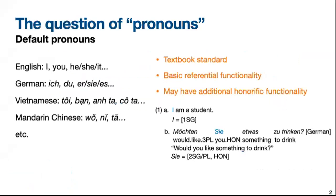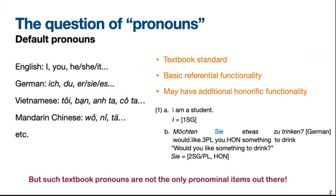We begin by taking a look at the default or textbook pronouns. These are items like English I, you, and German ich, du, etc. Such pronouns have basic referential functionality and sometimes also additional honorific functionality, as we can see in examples 1A and 1B. In 1A, the English pronoun I simply refers to the speaker. And in 1B, the German pronoun Sie with capital S refers to the addressee in a polite way. Such pronouns are what we usually see in textbooks or reference grammars, but they are not the only pronominal items out there.